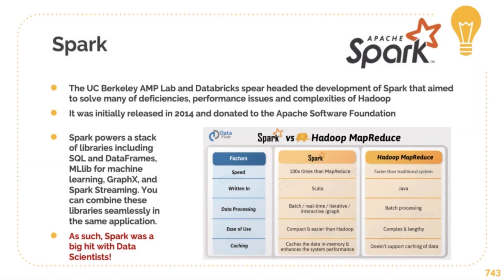So they introduced Spark a few years after, with an initial release in 2014, and Spark honestly changed everything. As you can see in the comparisons, Spark was 100 times faster than MapReduce. It was written in Scala, a very good programming language for distributed computing. Data processing was done in batches, in real time, iteratively, and with interactive graphs — whereas Hadoop was only batch processing. It was actually far easier to use than Hadoop, as they built functional programming tools with Spark. It does in-memory caching, which enhances system performance quite well, whereas Hadoop did not do that.